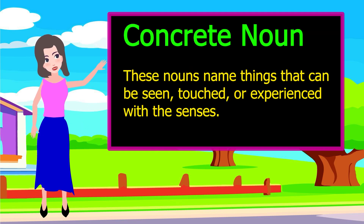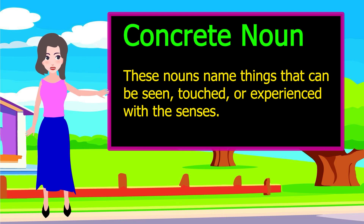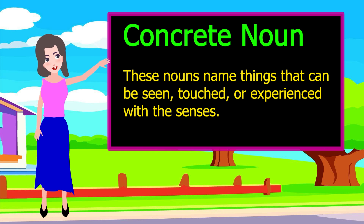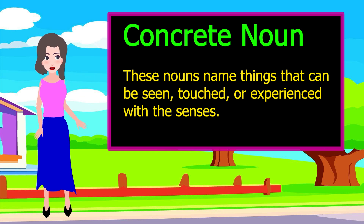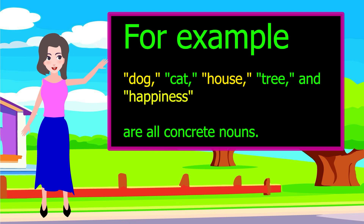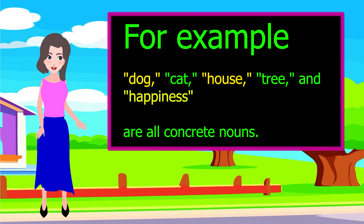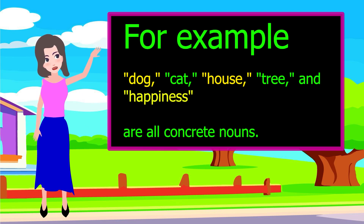Concrete nouns name things that can be seen, touched, or experienced with the senses. For example, dog, cat, house, tree, and happiness are all concrete nouns.